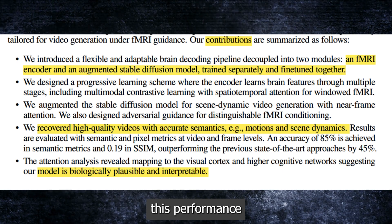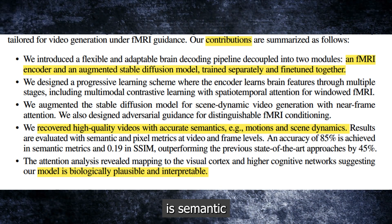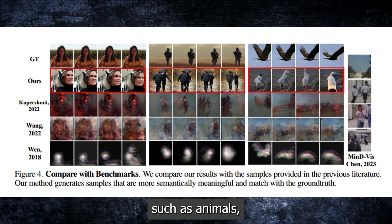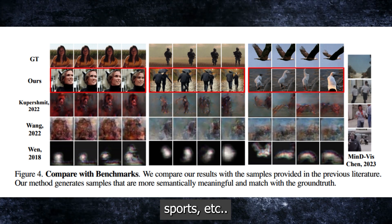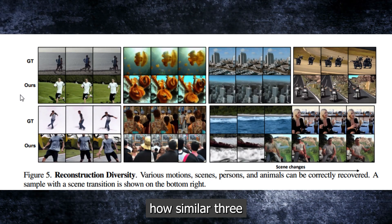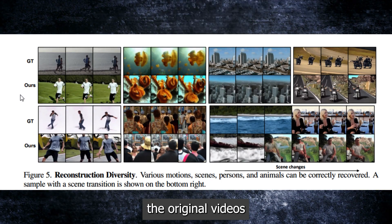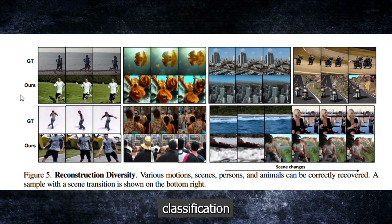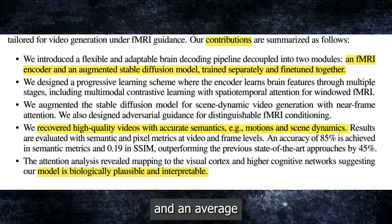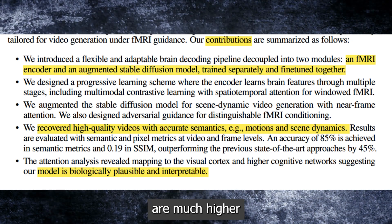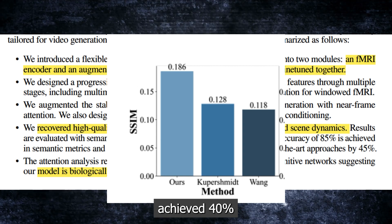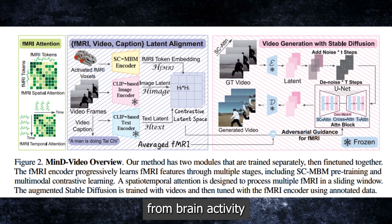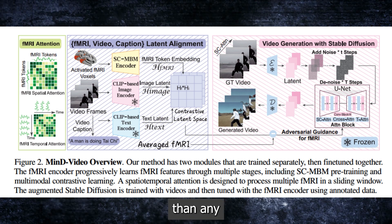The researchers also quantified performance using different metrics. One metric is semantic classification accuracy, which measures how well the reconstructed videos can be classified into different categories such as animals, vehicles, sports, etc. Another metric is the Structural Similarity Index (SSIM), which measures how similar the reconstructed videos are to the original videos in terms of brightness, contrast, and structure. Mind Video achieved an average semantic classification accuracy of 85% and an average SSIM of 0.19 — much higher than the previous state-of-the-art models, which only achieved 40% accuracy and 0.12 SSIM.